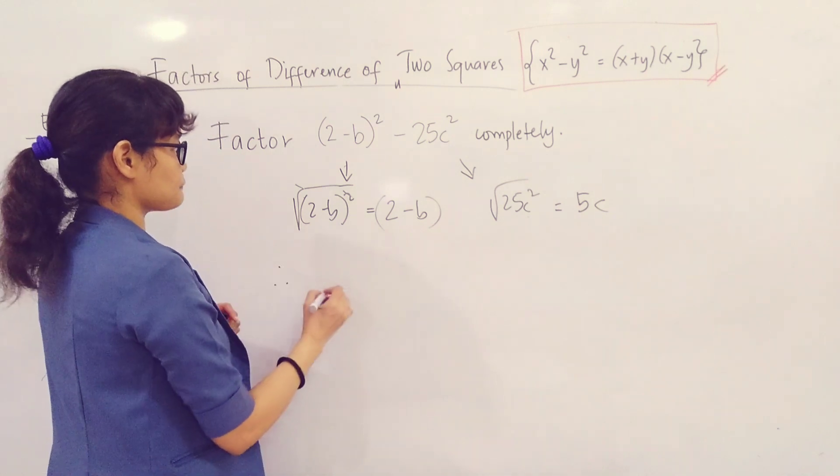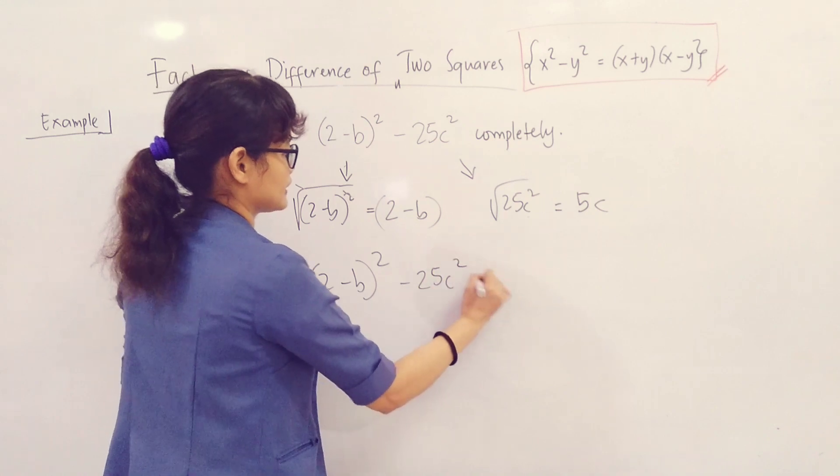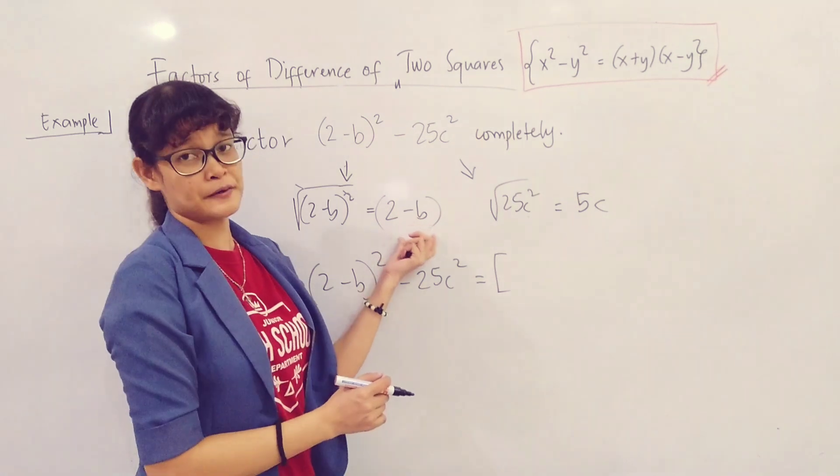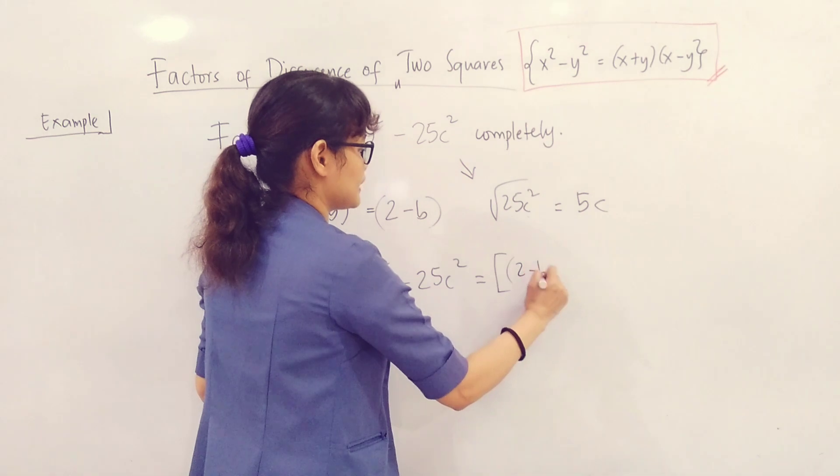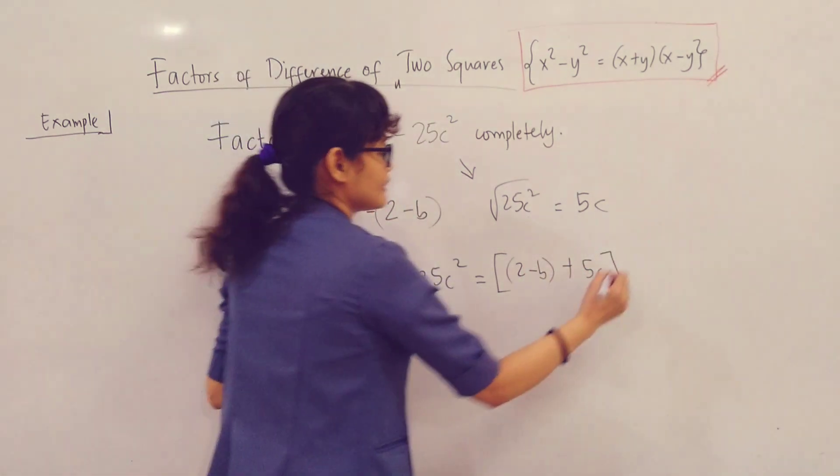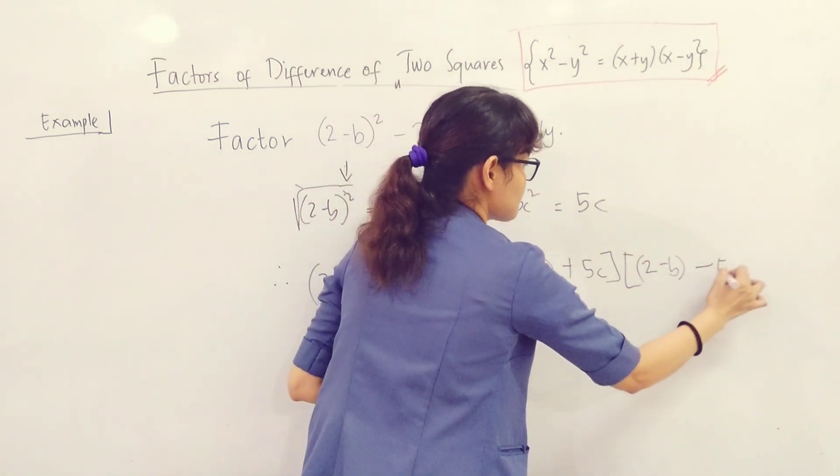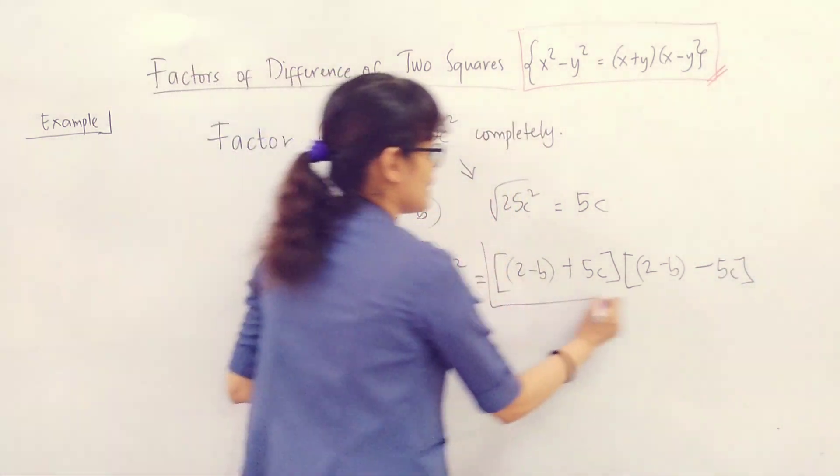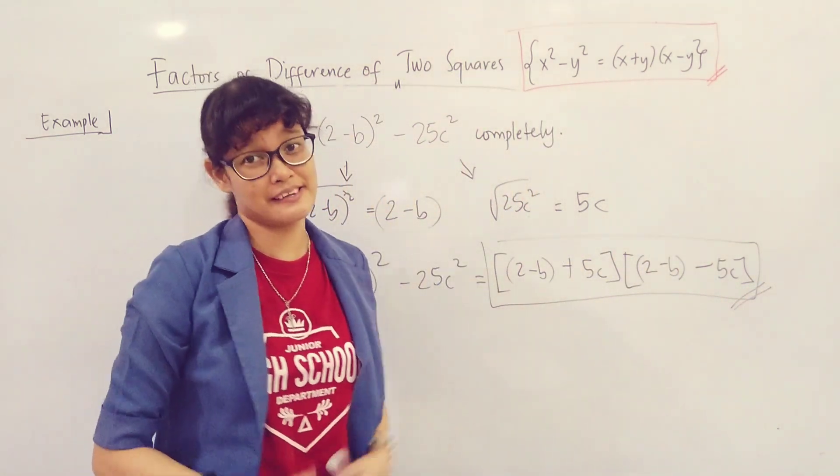The square root of 2 minus B squared is simply equal to - cancel this one out - 2 minus B. And as for 25 C squared, this is equal to 5 C. Therefore, the quantity 2 minus B squared minus 25 C squared is simply equal to the product of the quantity 2 minus B plus 5 C times the quantity 2 minus B minus 5 C. We can leave it like that, because they're not like terms. I guess this will be accepted already.